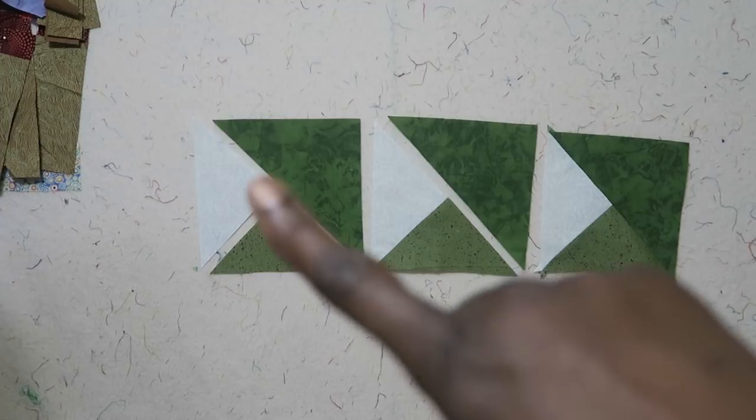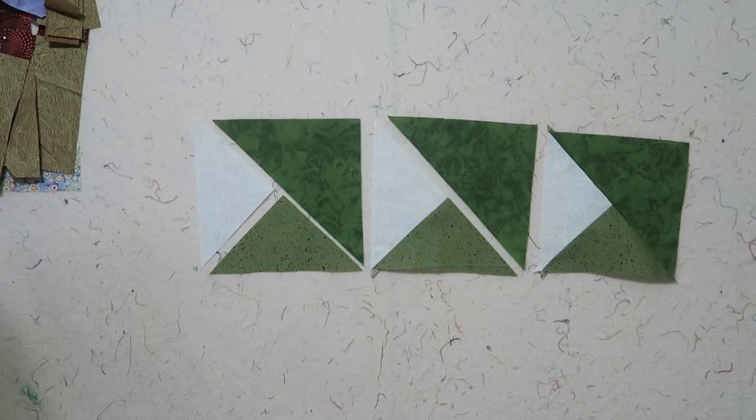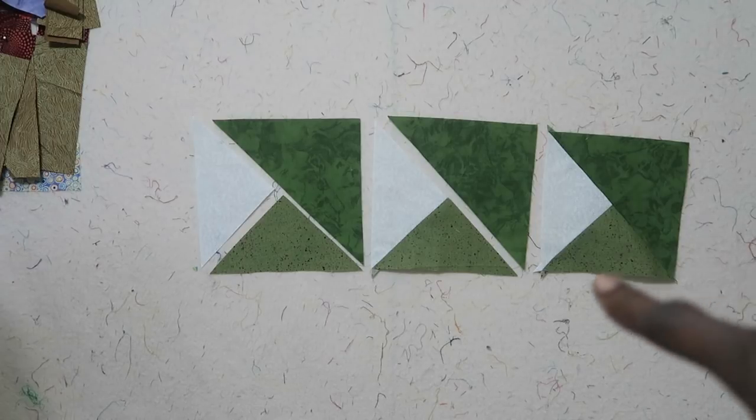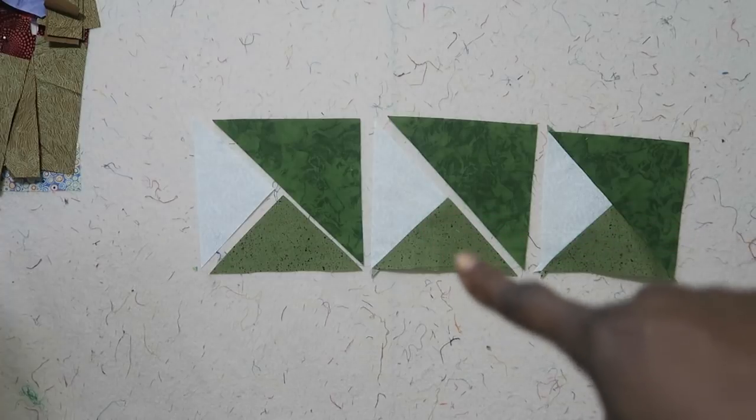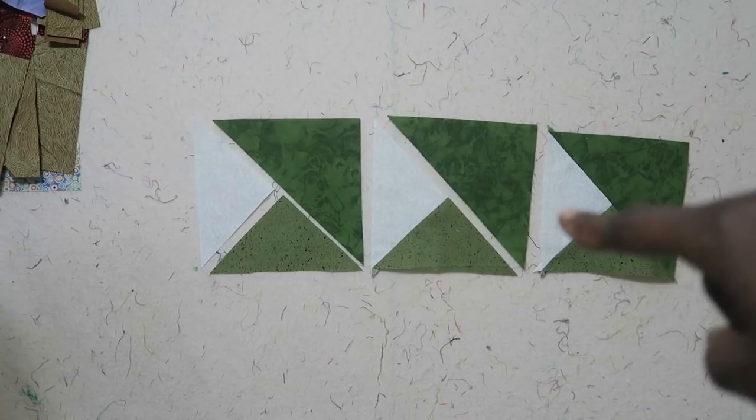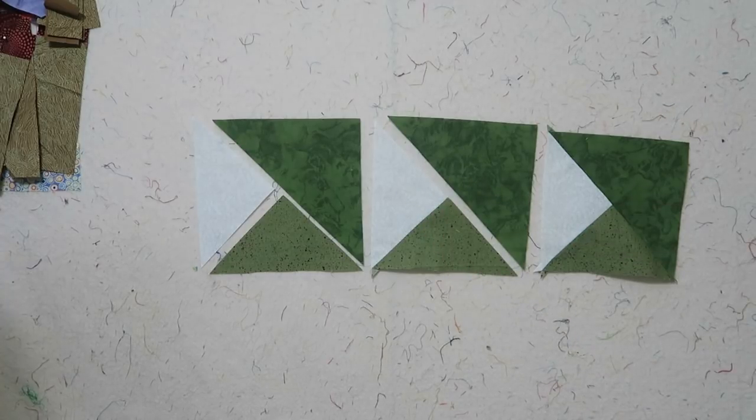Over here on the left you have your three-piece unit. You want to first sew your two smaller units on the left together along that short seam line. Once you get those two sewn together you'll end up with a unit like that and then you're going to sew your large half square triangle onto the two piece unit.